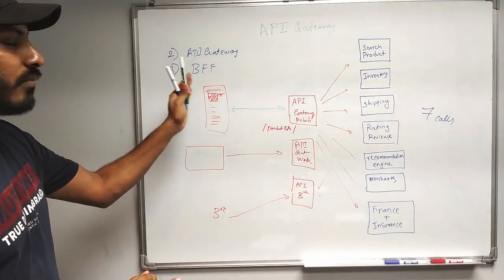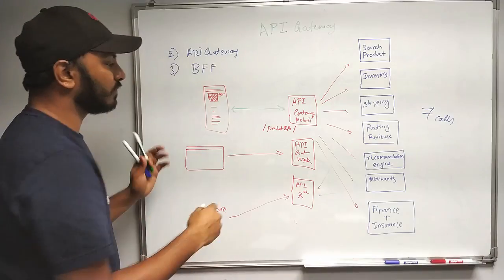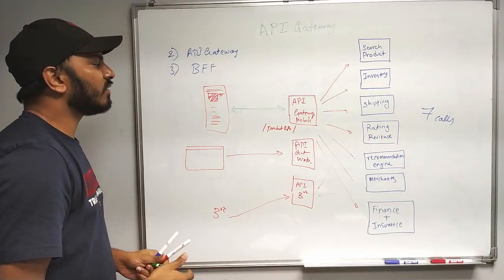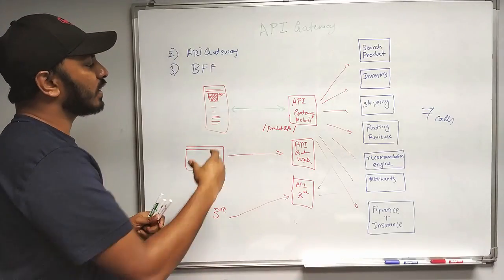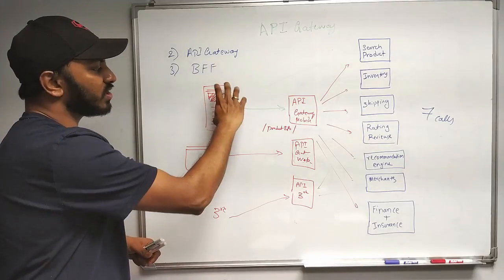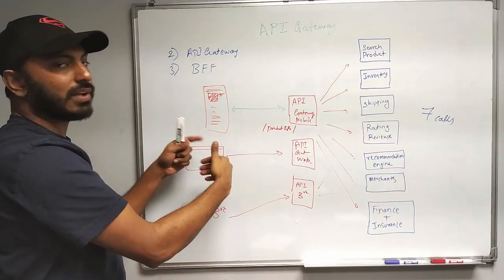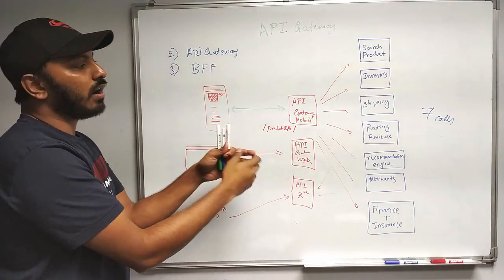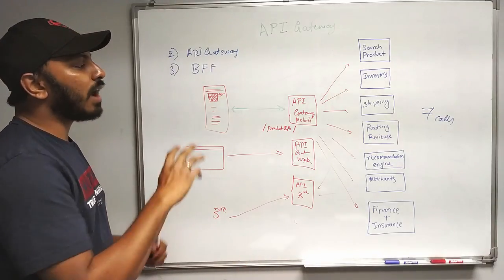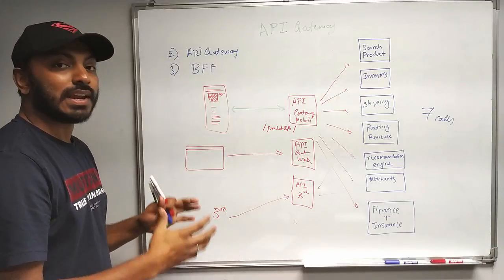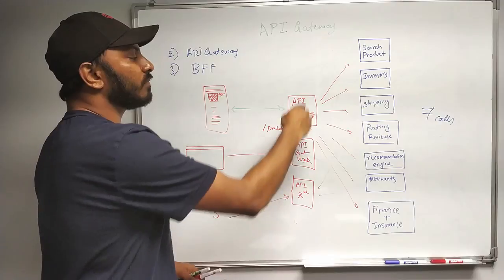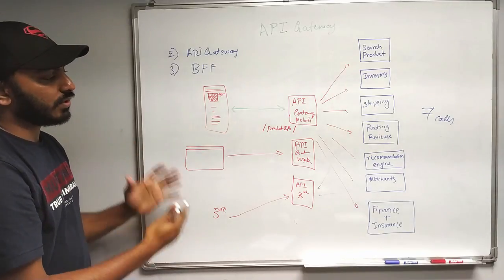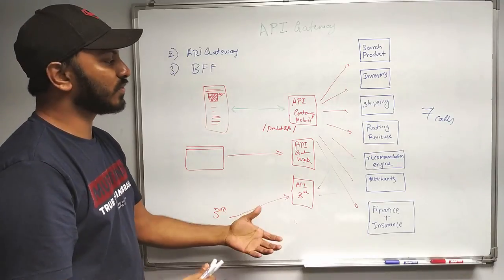This is basically the Backend for Frontend pattern. One advantage of BFF is that for mobile, it's not always worth pulling all the information at once. Instead, you can configure it to first load the information shown at the top, and then fetch the rest as the user scrolls. Also, if the mobile is on a 2G network, you might trim down some of the information, whereas if it's on WiFi, it behaves differently. So we can have different gateways specifically designed for different kinds of devices.